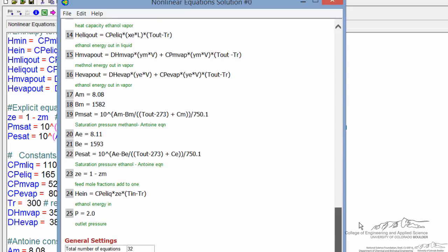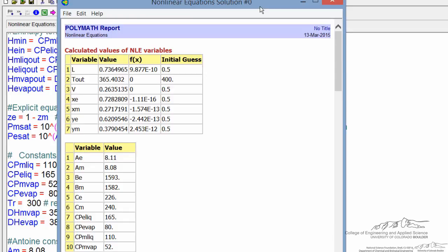So the solution is very quick. We can then now very easily change the outlet pressure, change the inlet composition or temperature, and calculate new values.